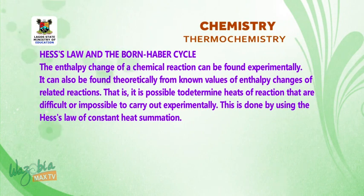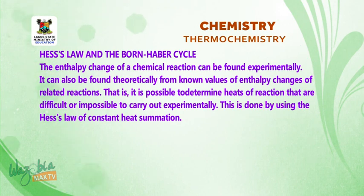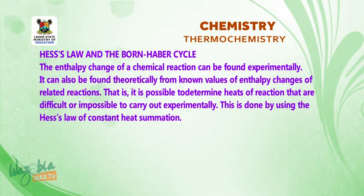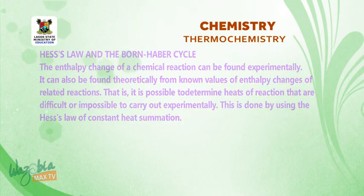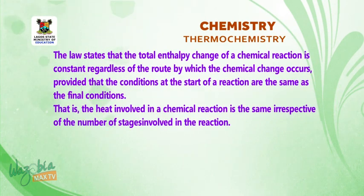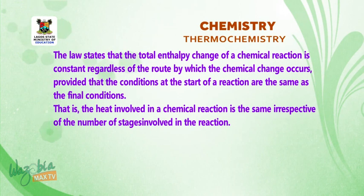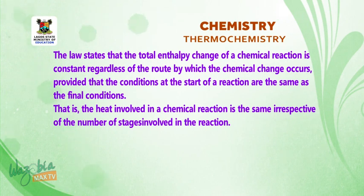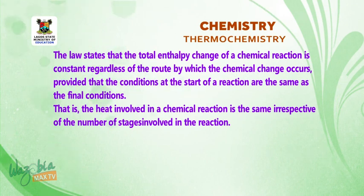The enthalpy change of a chemical reaction can be found experimentally. It can also be found theoretically from known values of enthalpy change of related reactions. That is, it is possible to determine heat of reactions that are difficult or impossible to carry out experimentally. This is done by using Hess's law of constant heat summation. The law states that the total enthalpy change of a chemical reaction is constant regardless of the route by which the chemical change occurs, provided that the conditions at the start of the reaction are the same as the final conditions. That is, the heat involved in a chemical reaction is the same irrespective of the number of stages involved.